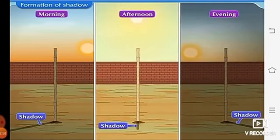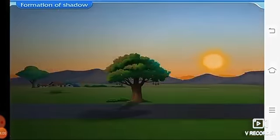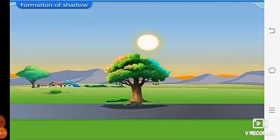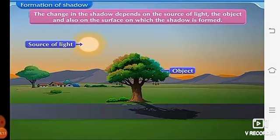The shadow of an object formed due to sunlight is long in the morning and evenings and short in the afternoon. We can easily note these changes if we observe the trees along the roadside. This change in the shadow depends on the source of light, the object and also on the surface on which the shadow is formed.